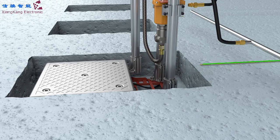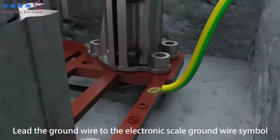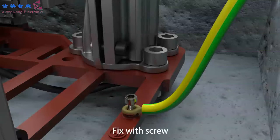Step 9: Connect ground wire. Put the electronic scale into the hole on site. Lead the ground wire to the electronic scale ground wire symbol. Fix with screw.